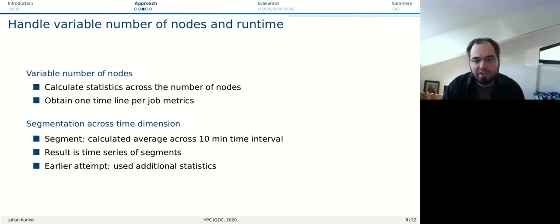A question we initially faced was how can we handle variable number of nodes and runtime? For the number of nodes, one way is you calculate statistics across the number of nodes. You compress the N nodes into just one profile or one time series for all the nodes. By doing that, you gain one timeline per job metric.